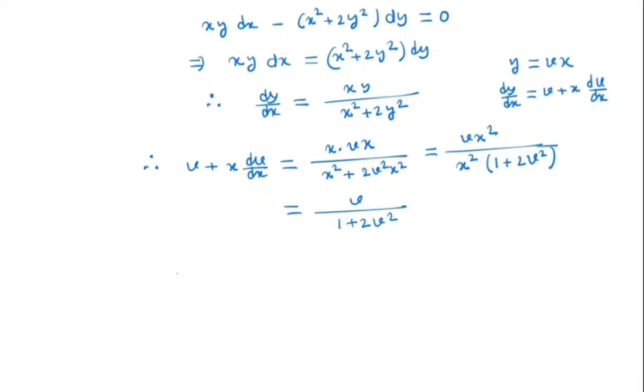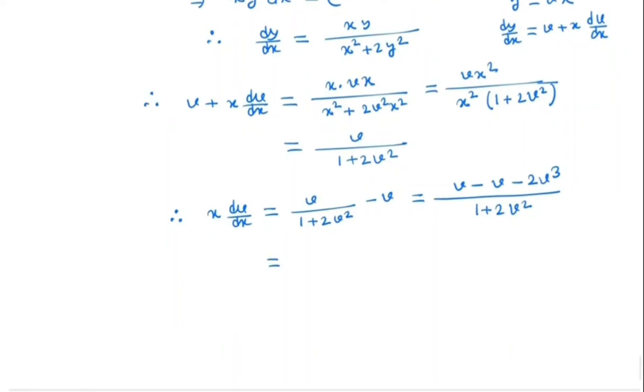Minus v, so it equals 1 plus 2v square in the denominator. And the numerator it will be v minus v minus 2v cube, which is nothing but minus 2v cube by 1 plus 2v square.